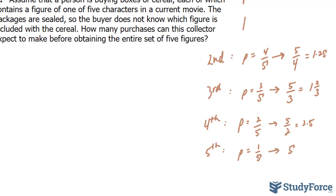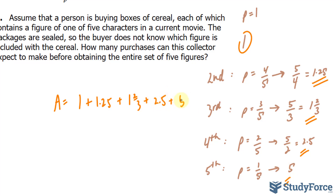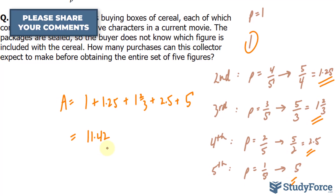From here, we will denote a random letter A to represent the number of purchases that this person needs to make in order to get all 5 figures. To find out how many purchases, you have to add up all of these values together: 1 plus 1.25, plus 1 and 2 thirds, plus 2.5, and the last one being 5. Adding these all up, you should end up with 11.42, or roughly that amount. So this person needs to purchase 11.42 boxes, or essentially 12 boxes, to ensure that all 5 characters are collected.